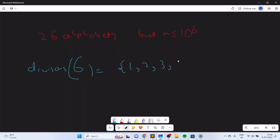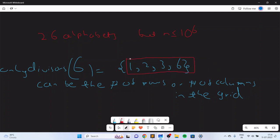Only among divisors of 6, so only divisors of 6 can be the number of rows or the number of columns in the grid. You cannot have a grid where the number of rows or the number of columns is not part of this set. This set basically tells you what can the size of the grid be - these are candidates for size of the grid.